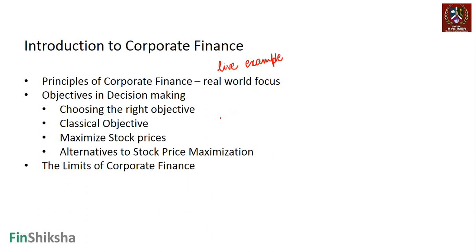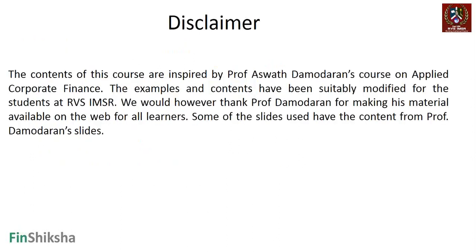We want to look at the key objectives of decision-making — what is the right objective of decision-making for any firm, what was the historically classical objective which was around maximizing stock prices, and whether there are any other alternative objectives available. Then we look at what limits traditional corporate finance faces and if there are any solutions to those, before moving to individual components of applied corporate finance in subsequent units.